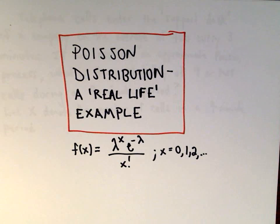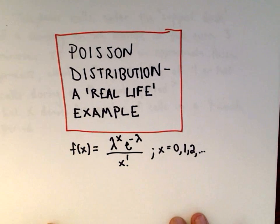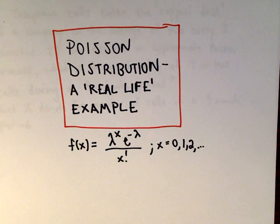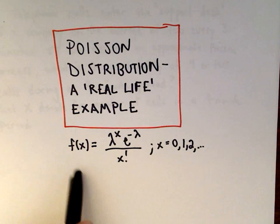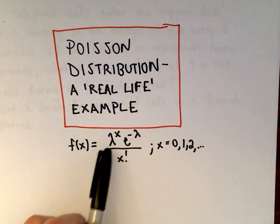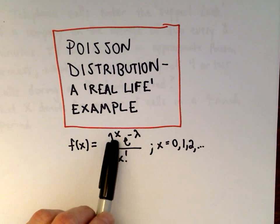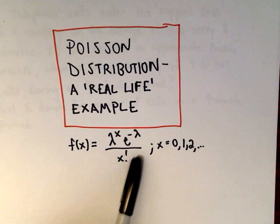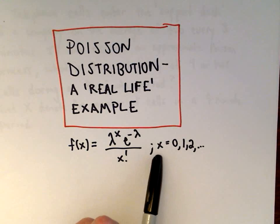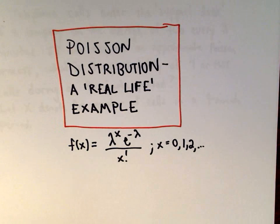In this example, we're going to look at a Poisson distribution — a real-life example that someone out in the real world is considering. The probability mass function of a Poisson distribution is f(x) = λ^x · e^(−λ) / x!, where x = 0, 1, 2, 3, ...